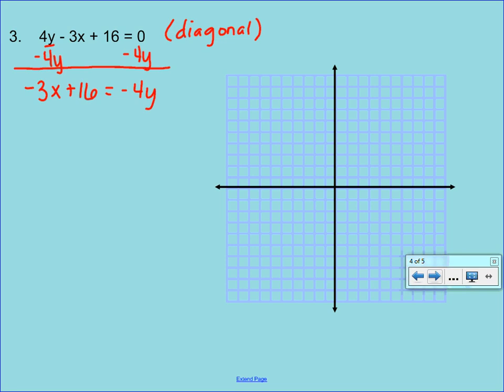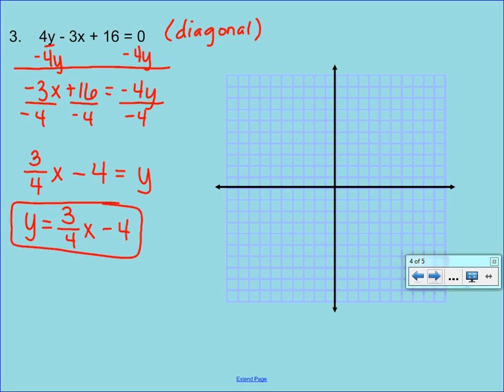Now we need to undo our multiplication. Divide each term by a negative 4. We want to make sure we leave that 3 fourths as a fraction, because that is our slope. So we have a 3 fourths x minus a 4 that is equal to a y. Now, because us algebra teachers are extremely picky, let's write it so it looks like a regular slope-intercept equation. So now we have a y that's equal to a 3 fourths x minus 4.